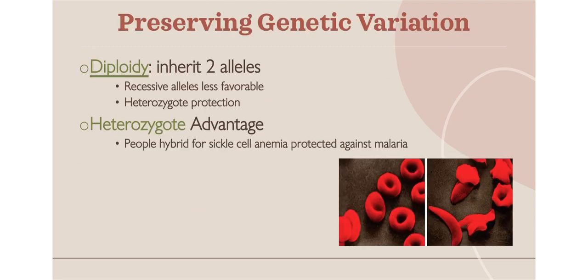One of the things that keeps evolution going is genetic variation. You need variation within a species so that one gene can be more fit for an environment than another. One way we maintain that is through diploidy — in sexual reproduction, you inherit two alleles, one from mom and one from dad, creating enormous combinations in the millions or billions. Another idea is the heterozygote advantage: sometimes having one dominant and one recessive allele results in a trait not seen in either pure population. For example, people with sickle cell anemia are actually resistant to malaria, which is an evolutionary advantage.